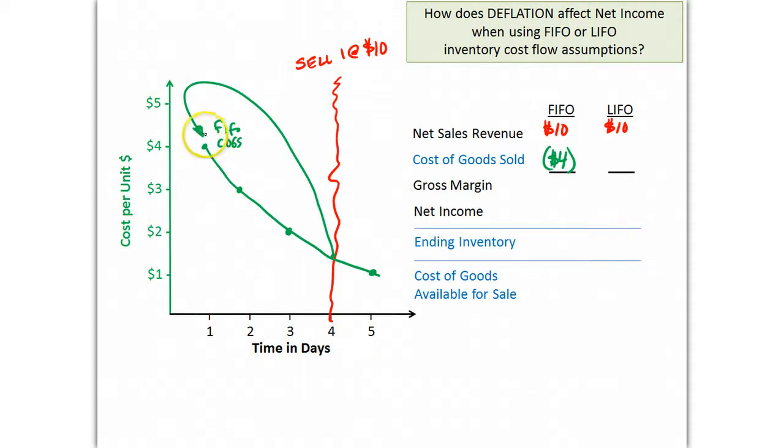Which means, since this $4 unit cost was expensed, that means these others, the $3 unit, the $2 unit, and this one even after the sale, the $1 unit, have not been expensed. Those are in ending inventory.